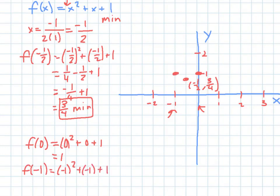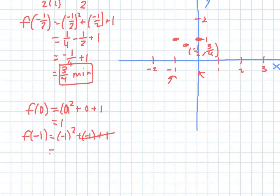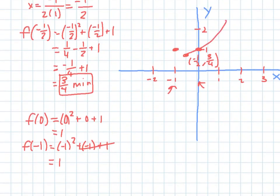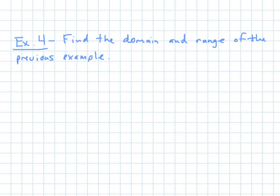So the negative 1 and 1 cancel out. Negative 1 squared is 1. So then it's the same. So then I get my parabola. There's my sketch. Let's try the next one.